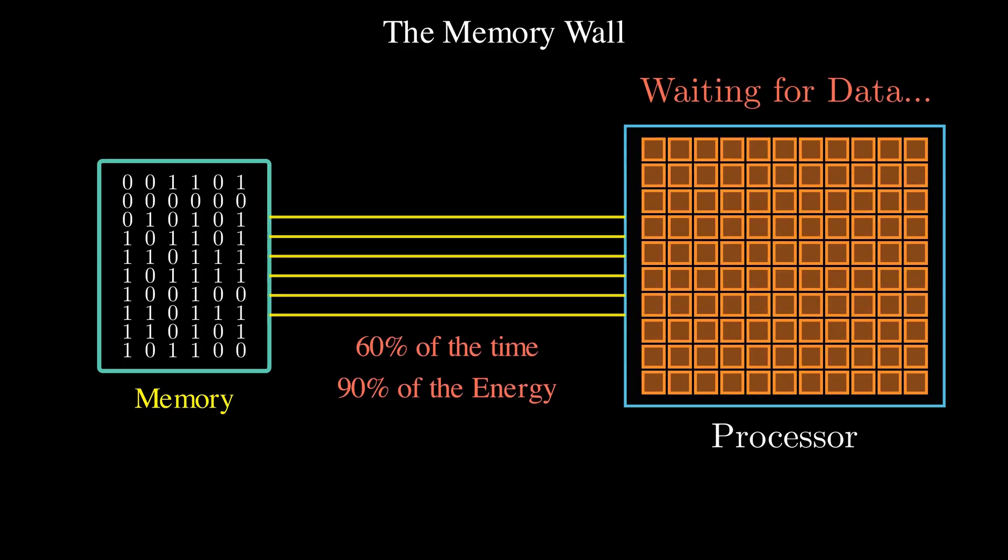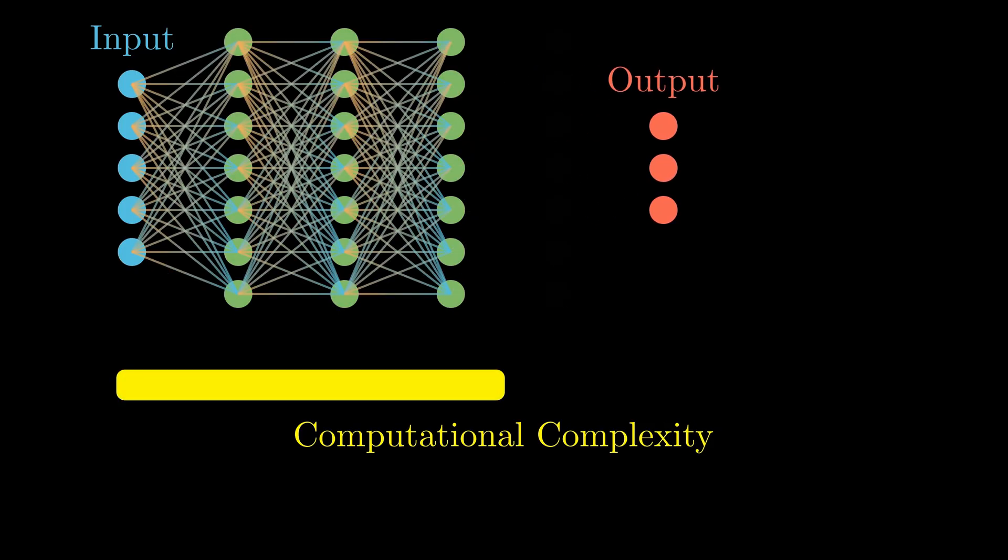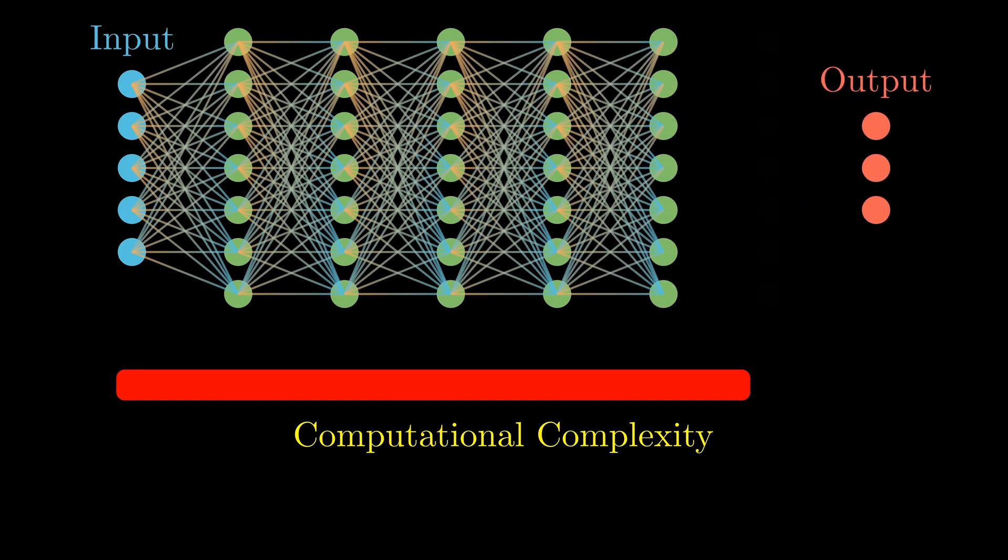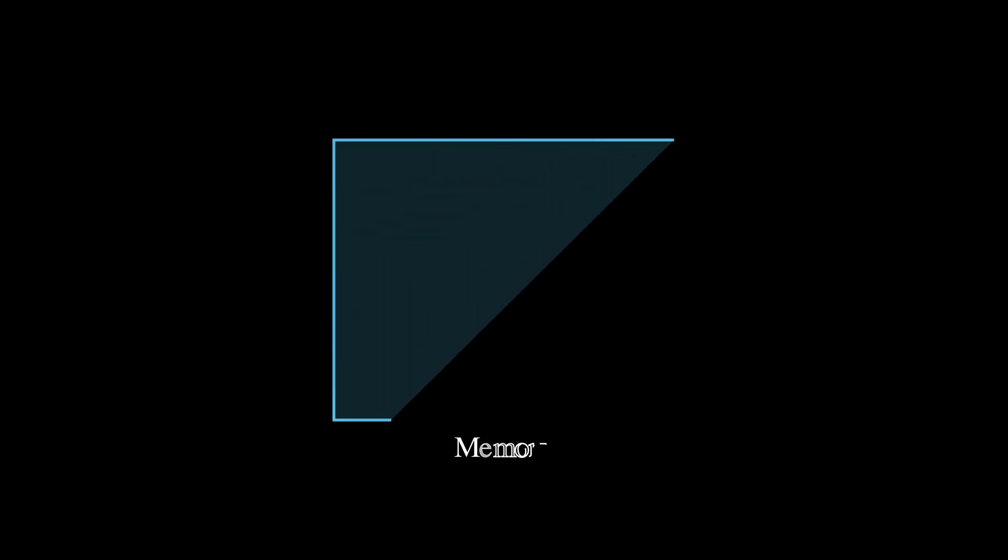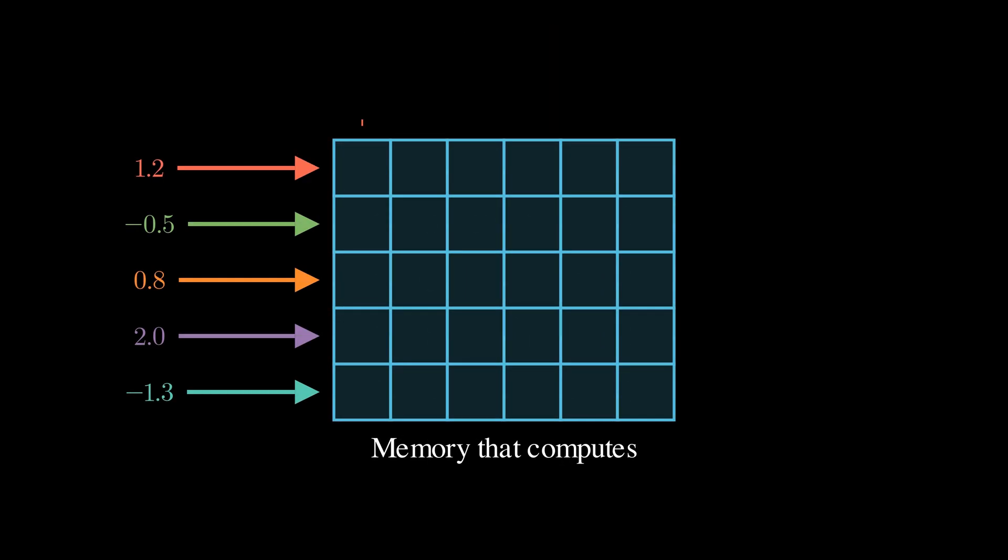Every time data moves back and forth, it burns energy and time, and that adds up fast. In most AI workloads, over 60 percent of the time and 90 percent of the energy is spent just moving data, not computing. And as AI models scale up, so does the problem, thanks to the computational complexity of the vector-matrix multiplications.